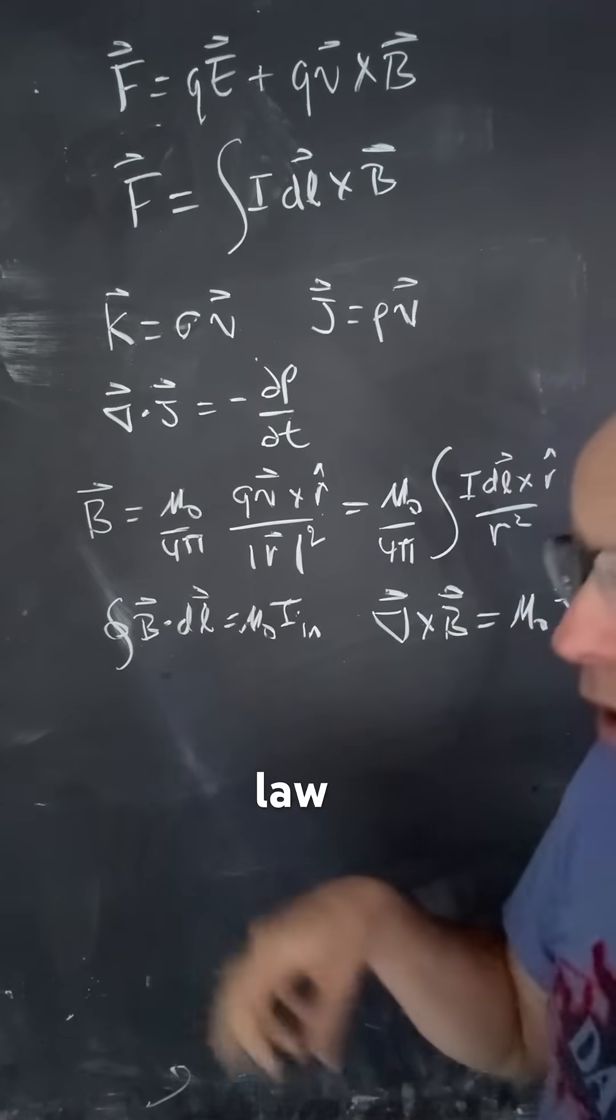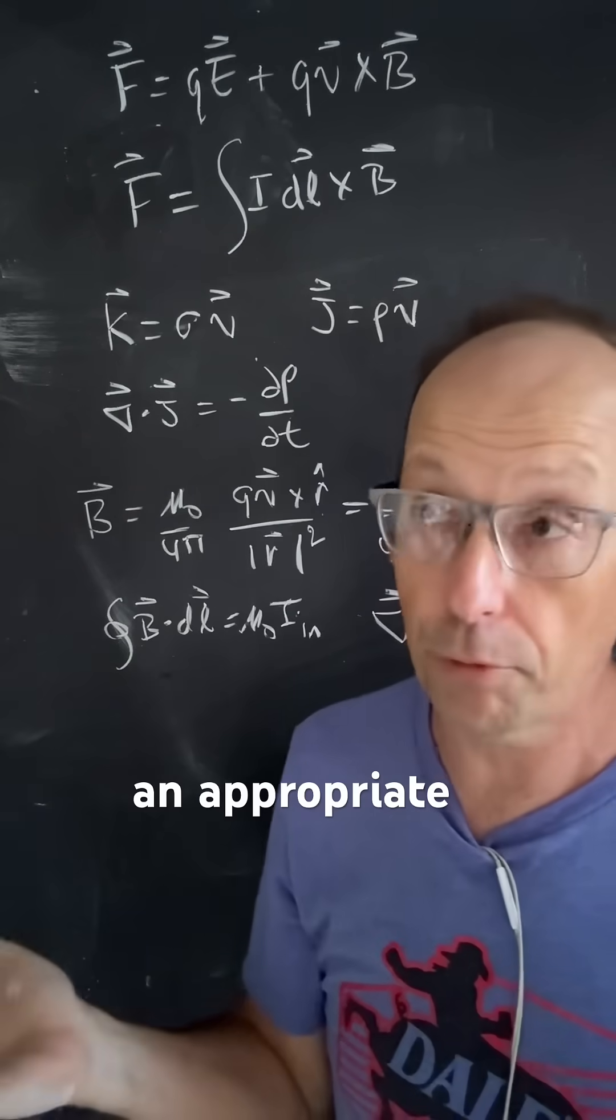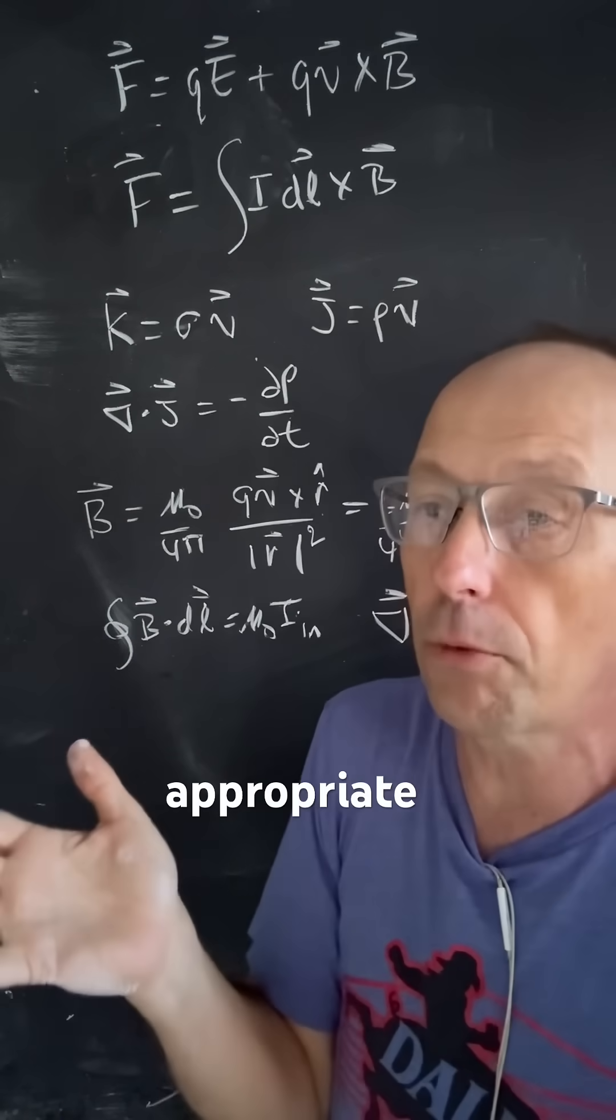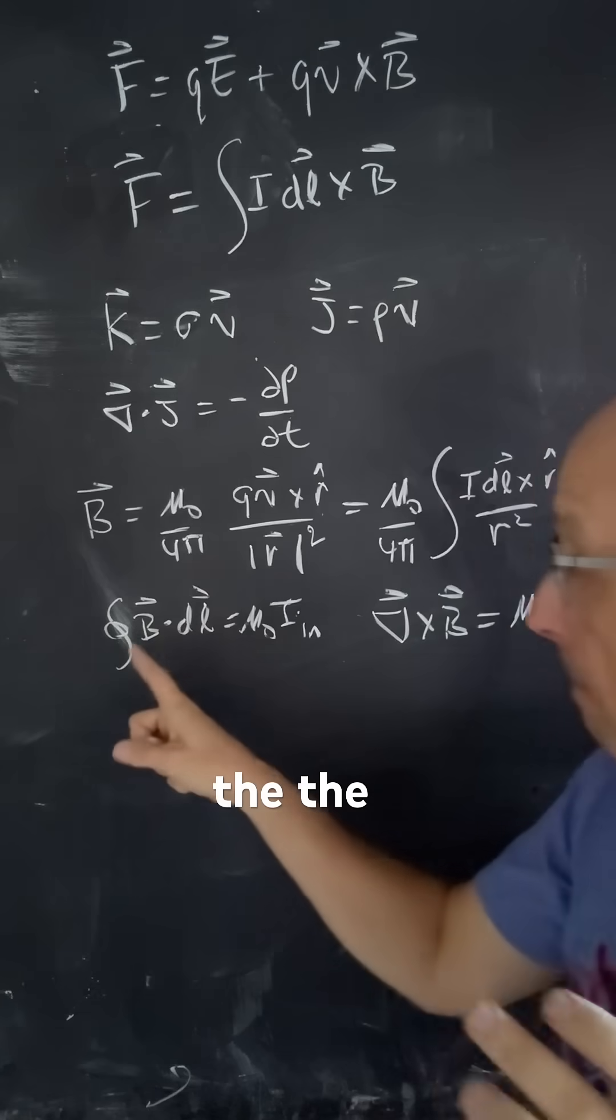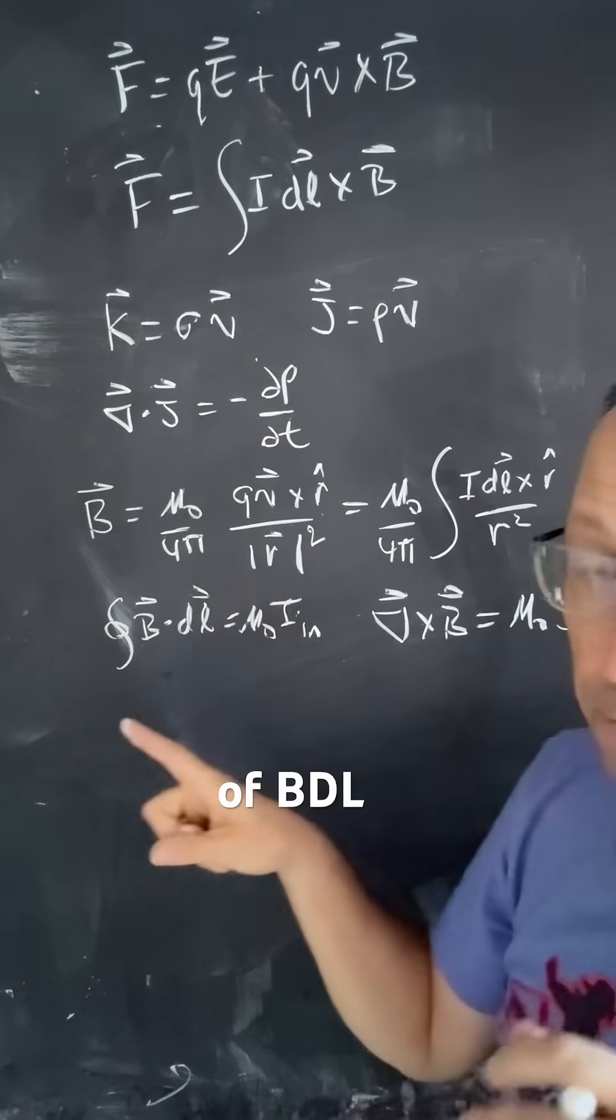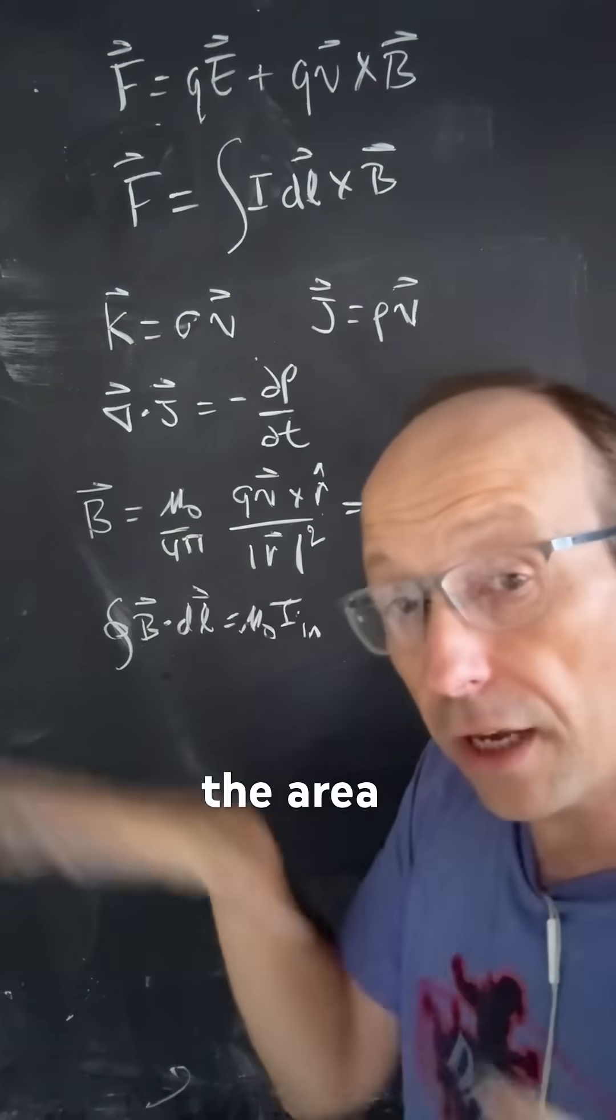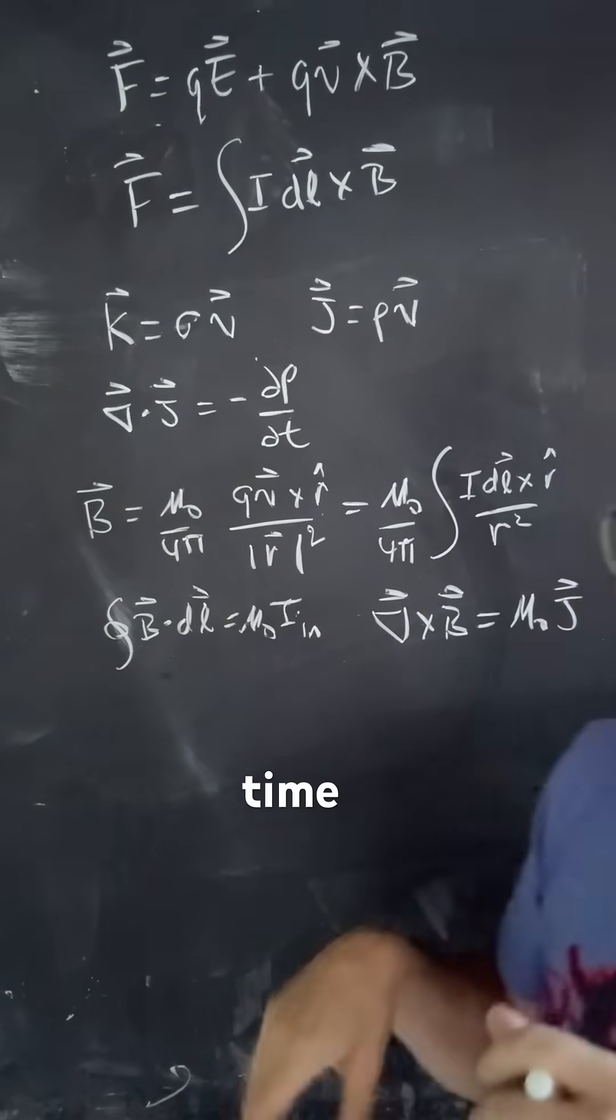This is Ampere's law. This says that if you have some region of space and you can pick an appropriate, you don't even have to pick that, but if you pick an appropriate path, the magnetic path integral of B dot DL around that path is equal to the current passing through the area associated with that path times Mu naught.